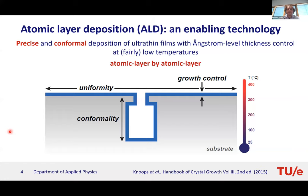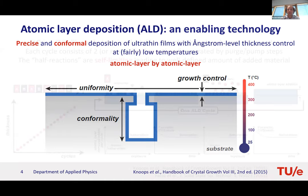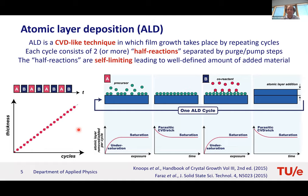ALD is a method to deposit ultra-thin films with ångström-level thickness control — films can be built up atomic layer by atomic layer with extremely good growth control, excellent uniformity, and excellent conformality (meaning the film thickness is the same everywhere on complex surface topologies). It operates at relatively low substrate temperatures, typically below 400°C. ALD is a CVD-like method in which film growth proceeds by repeating cycles, each typically consisting of two half-reactions (A and B).